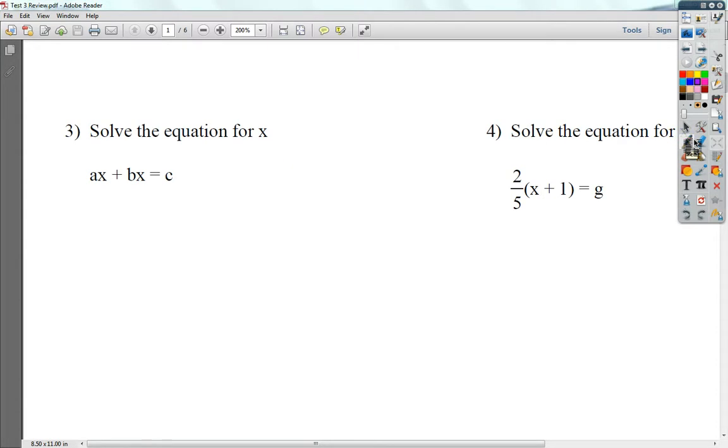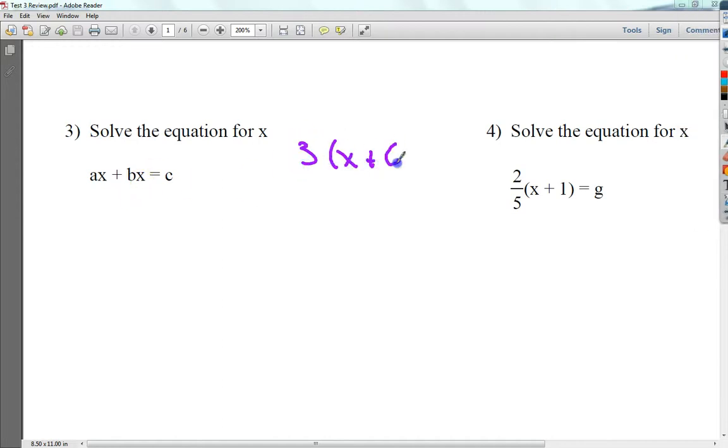Now, for number 3, we're going to do the opposite of distributive property, because we're trying to get x by itself, but x is with a and b. When you had distributive property, you just applied the multiply to both of them. But in this case, I'm actually going to take the x away, because it's with a and b. So what I can do is factor it out. It's the opposite of distributive.